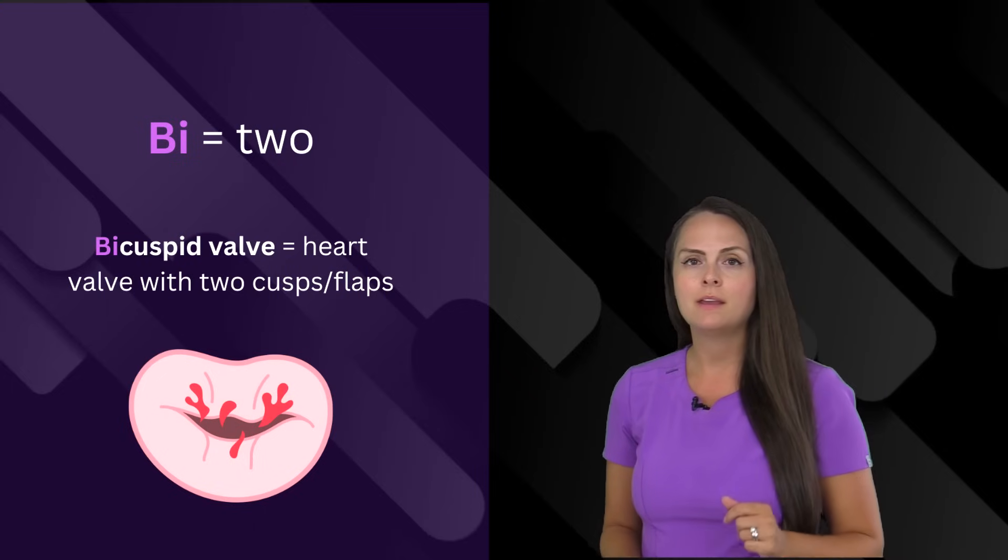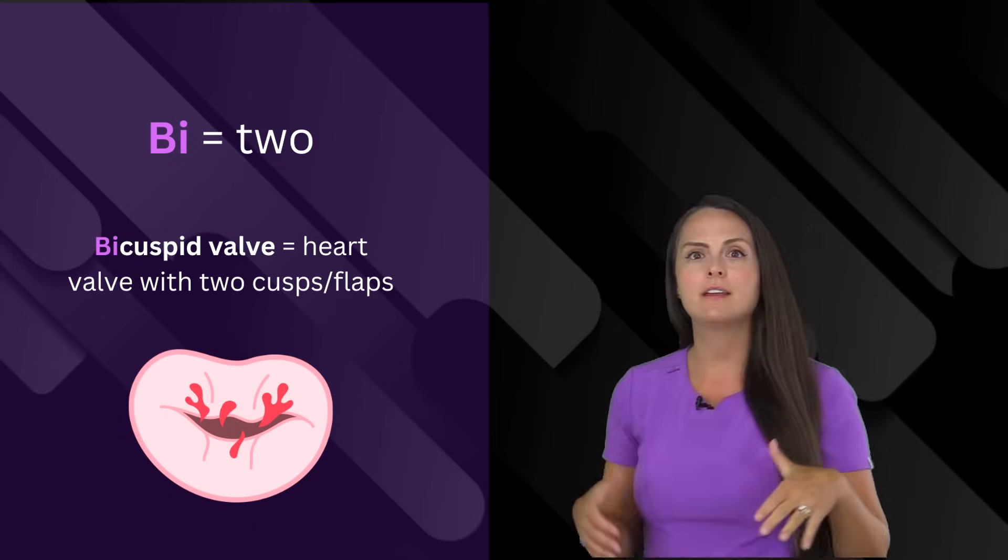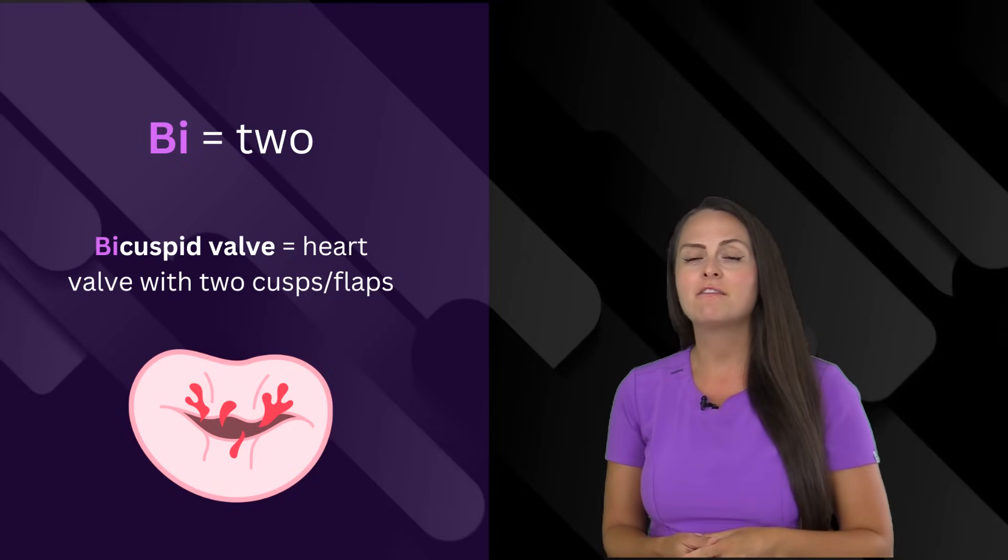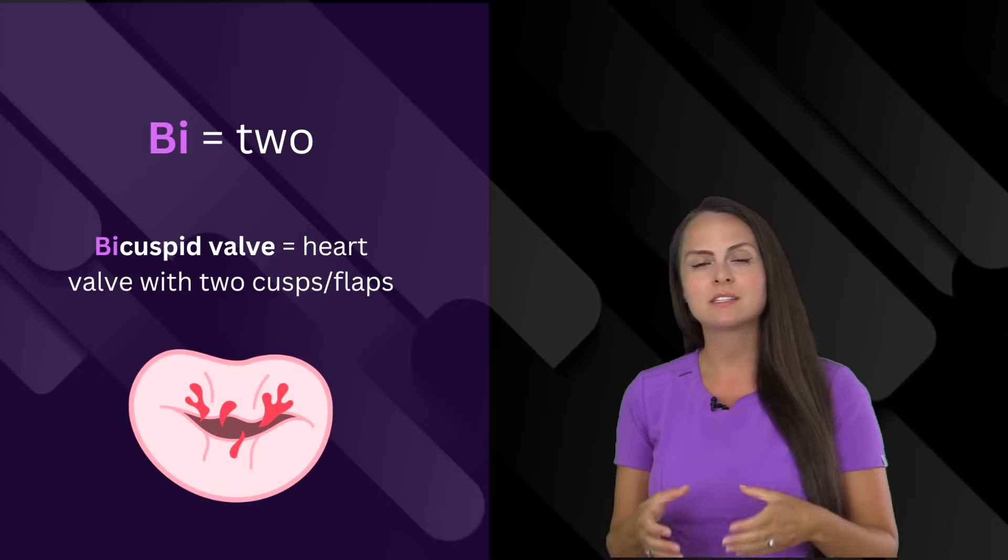Then we have bi, that means two. So whenever we talk about the bicuspid valve in the heart, we're talking about a valve that has two cusps on it.